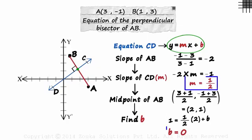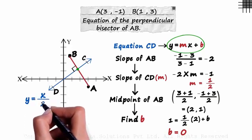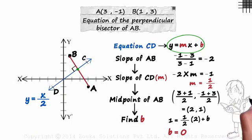M is half and B is 0. The equation of line CD will be Y is equal to X over 2. This video was a bit taxing I am sure. If you haven't understood it well, make sure you go through it again. I am sure it will make more sense.